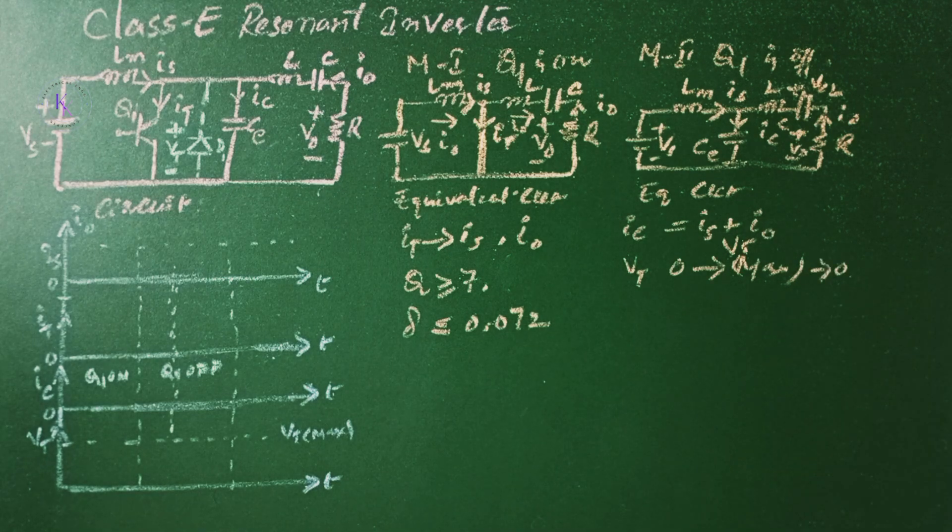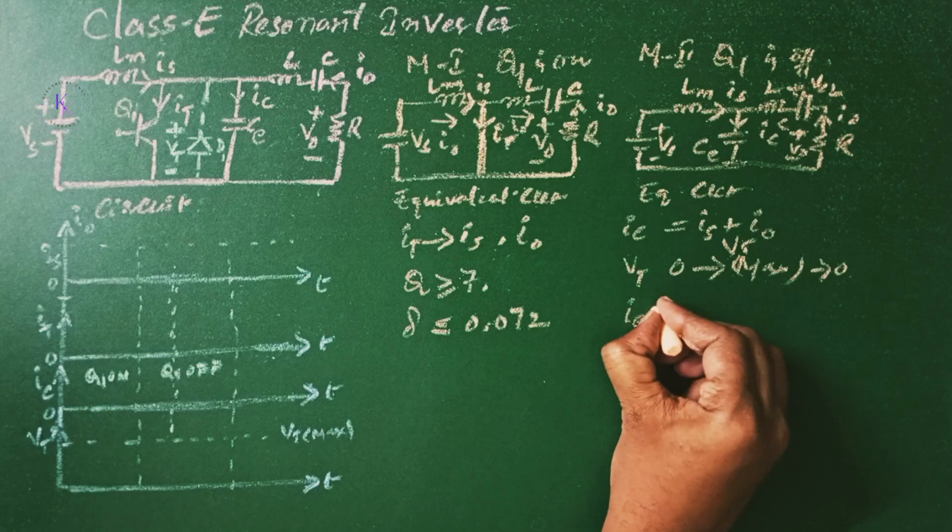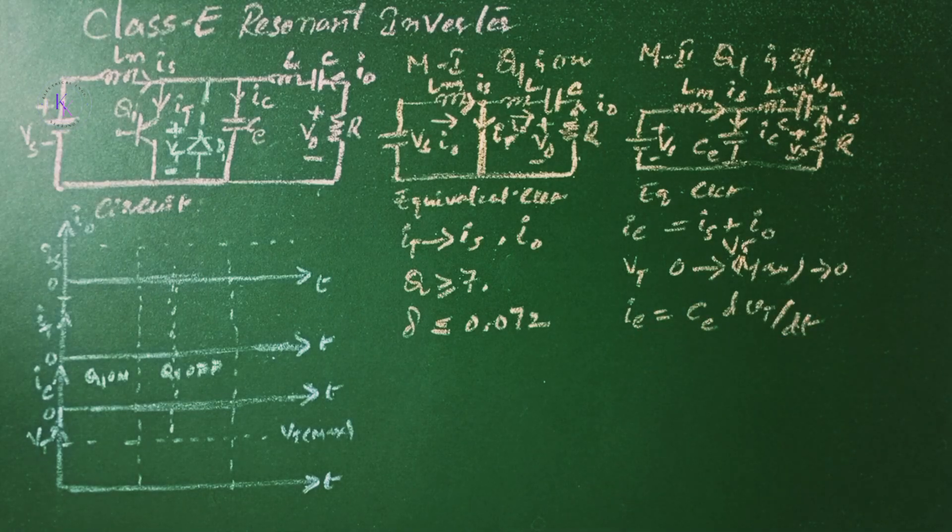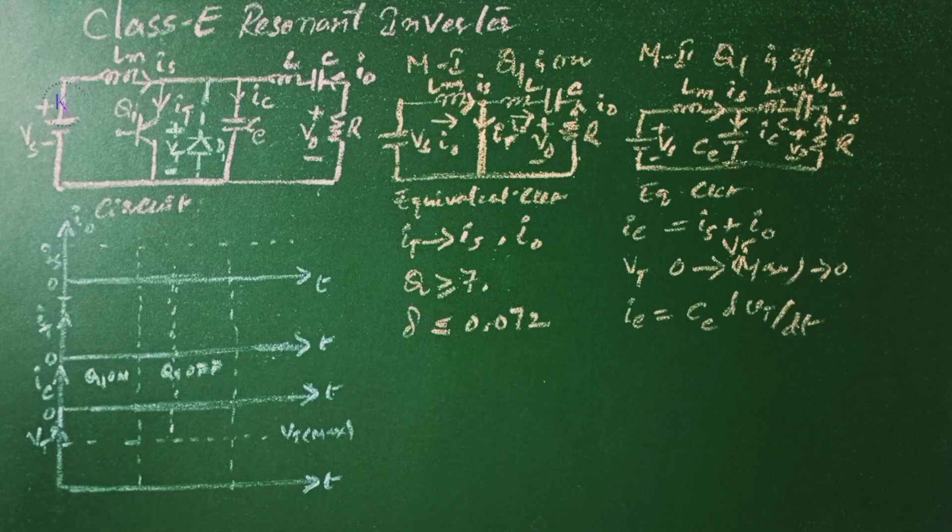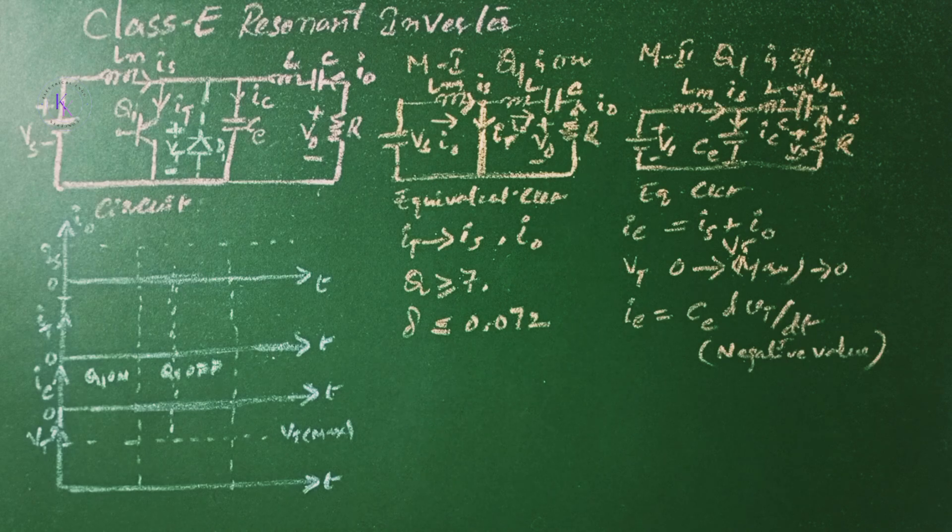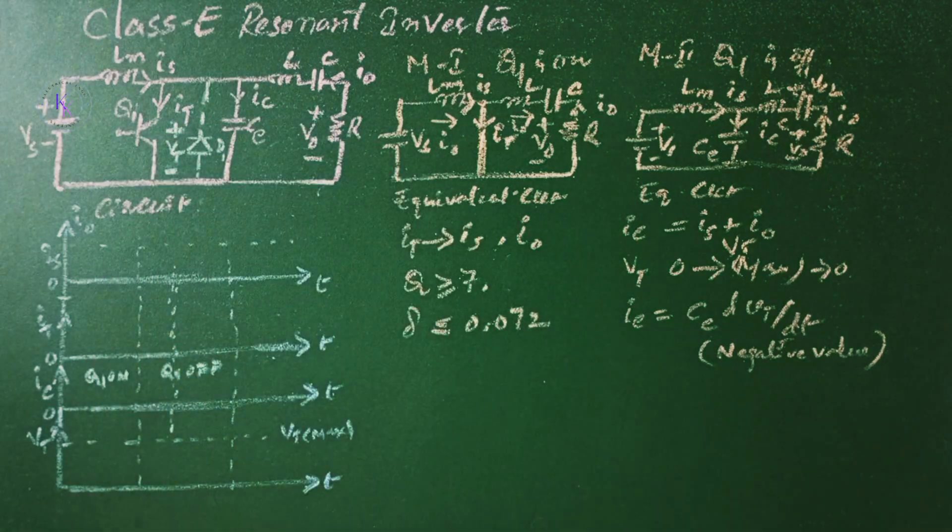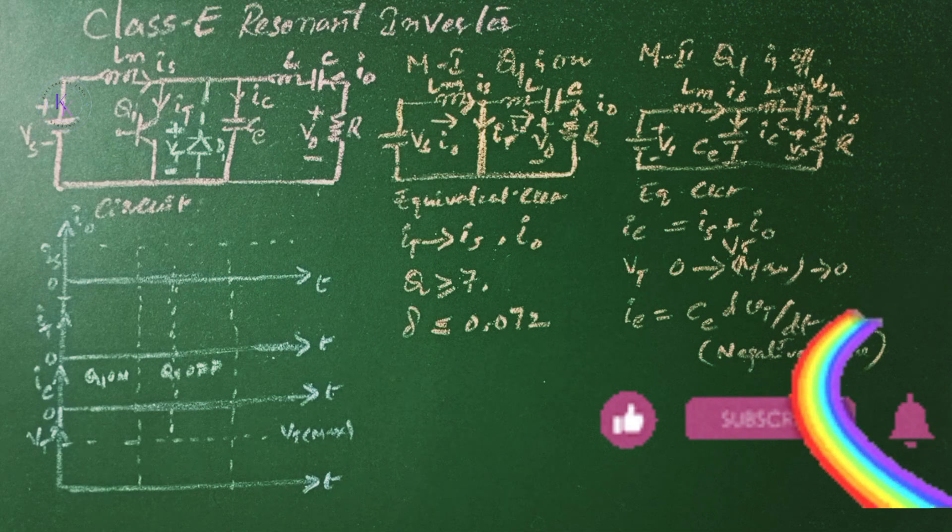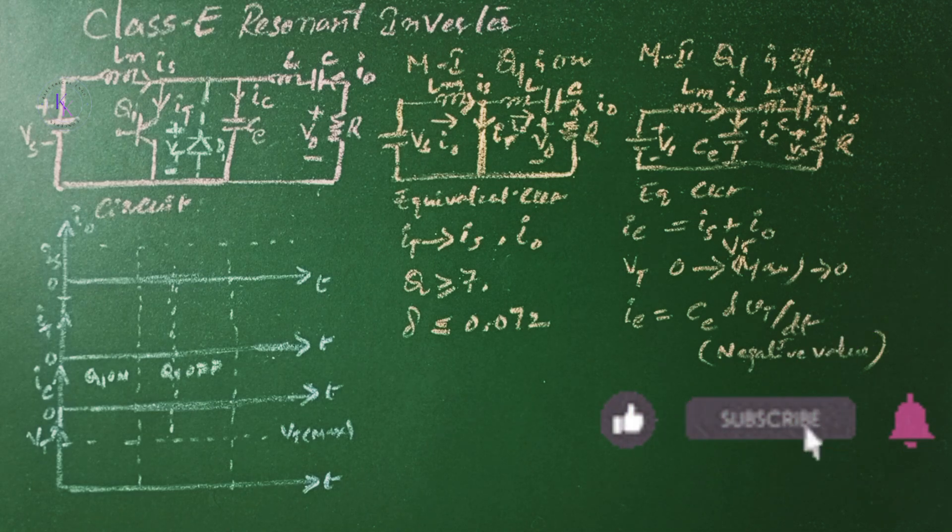When the switch voltage falls to 0, the IE equals to CE dVT by dt will not only be a negative value. To limit this negative voltage, an anti-parallel diode, you can see here D1, is connected. If the switch is MOSFET, its negative voltage is limited by its built-in diode to a diode drop.